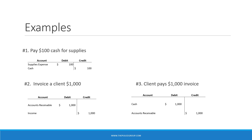In our second transaction, we invoice a customer $1,000. The debit is to accounts receivable, an increase in an asset, and the credit is to income, an increase in income. The third transaction: the client pays the $1,000 invoice. So we'll debit cash, an increase in asset, and credit accounts receivable, a decrease in asset.